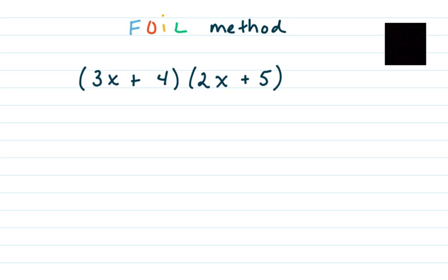But we're going to really just do a double distributive method. So the reason it's called FOIL is because they want us to multiply the first term in the first parentheses by the first term in the second parentheses. That's first times first.